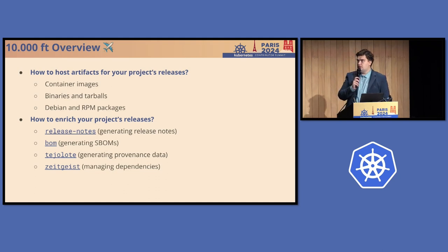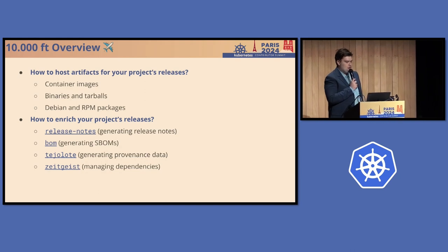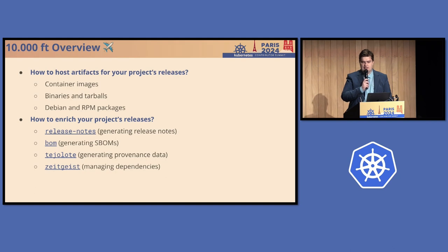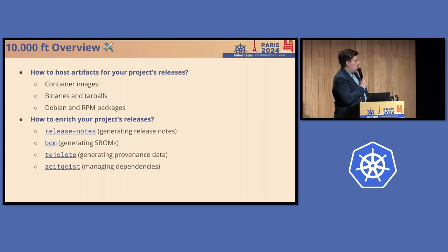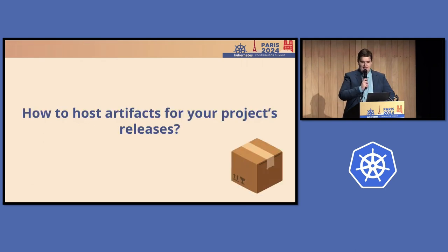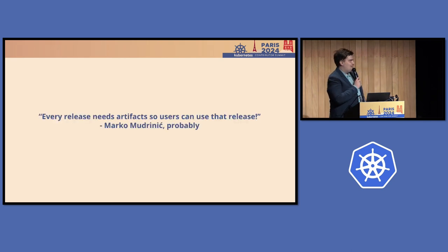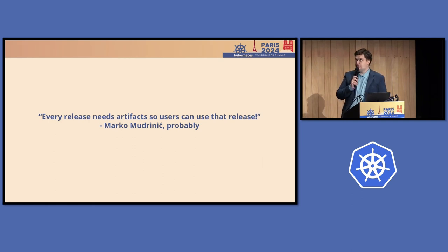At a 10,000-foot overview, what we are going to see today: I'm going to start with how to host artifacts for your project's releases — speaking of container images, binaries and tarballs, Debian and RPM packages. Then we are going to see how to enrich your project releases with tools like release notes, BOM, Telehote, Zeitgeist, and similar tools. Let's start with how to host artifacts for your releases. Every release needs some artifacts so users can actually use that release.